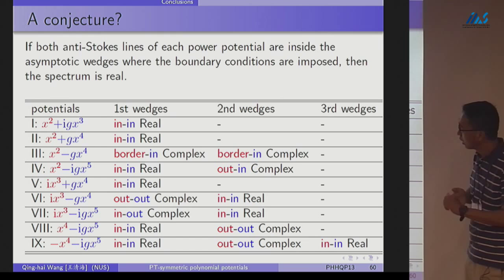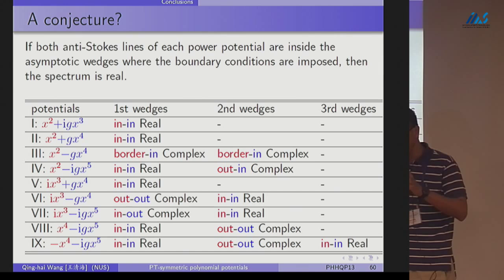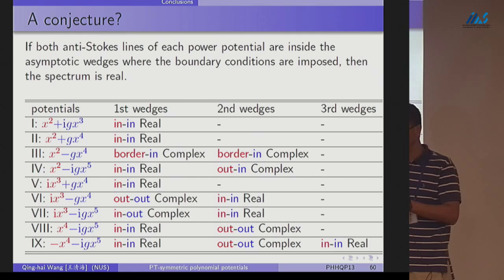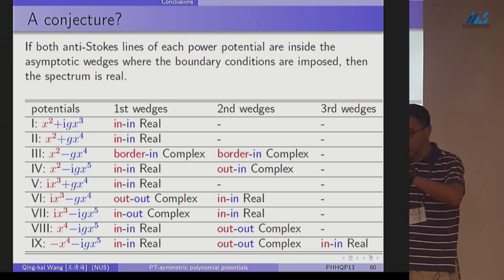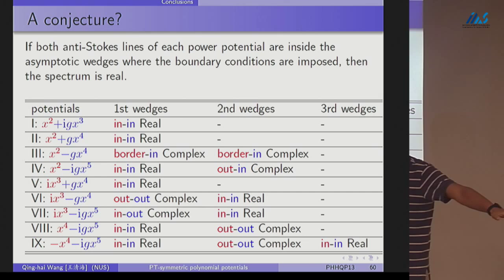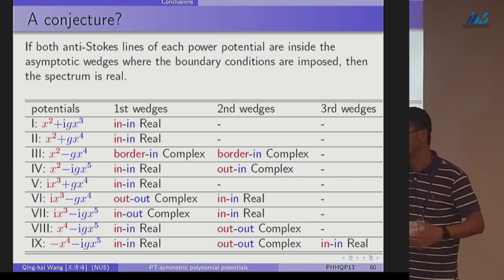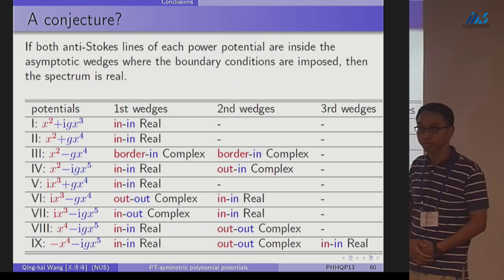And there is another example, rather trivial example, also support my conjecture, is the Hermitian one. If you have Hermitian polynomial potentials with only even terms, because only even Hermitian one can be interpreted as PT symmetric. The other one, x alone doesn't. So that one, all the Hermitian ones, the Stokes wedge is always, there's a pair including the real axis. The even one, the even Hermitian powers. So therefore, this conjecture also agree with the Hermitian polynomial potentials should have real spectrum if you impose boundary condition on real axis, which will cause the trivial result. That's all. Thank you for your attention.